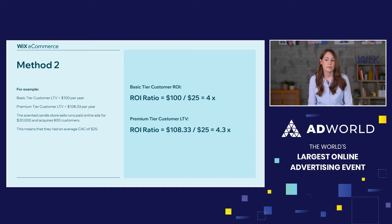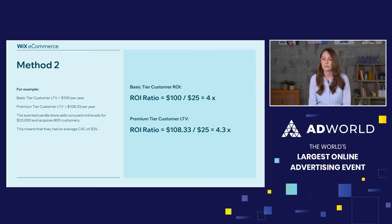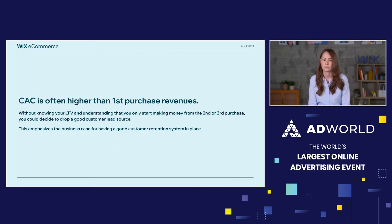We can do the same ROI calculation using method two. If you remember, we had basic tier $100 and premium tier $108.33. Calculating the ROI gives us 4x for basic tier and 4.3x for the premium tier.